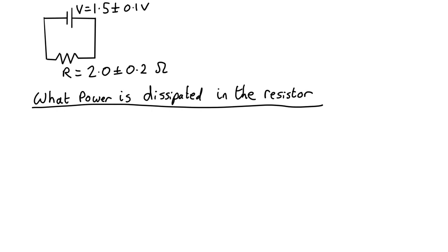This video is a worked example of calculating uncertainties. Let's imagine we have this question. We've got this circuit and we want to work out how much power is dissipated in the resistor.